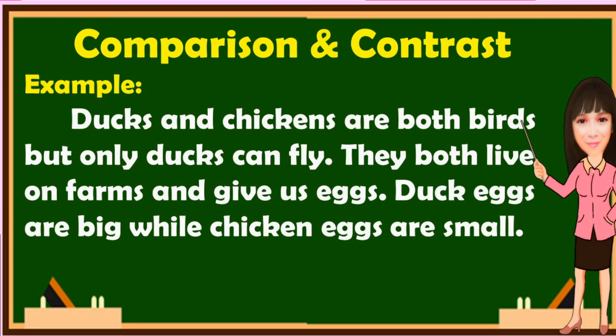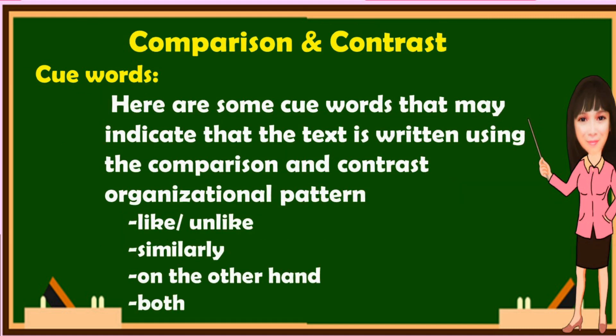Here is an example: Ducks and chickens are both birds, but only ducks can fly. They both live on farms and give us eggs. Duck eggs are big while chicken eggs are small. In this paragraph, we compare ducks and chickens. Both are birds and they give us eggs. The differences are that duck eggs are big while chicken eggs are small, and ducks can fly while chickens cannot. Keywords for comparison and contrast include: like, similarly, on the other hand, both.